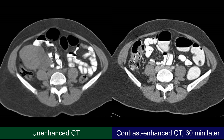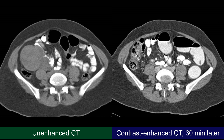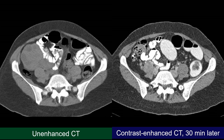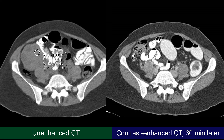On the unenhanced CT we see a solid lesion which is not identified on the contrast-enhanced CT. It has a tiny spot of calcification and a few peripherally located rounded structures less dense than the rest of the lesion. The rest of the lesion is quite dense for what we expect from a soft tissue lesion on unenhanced CT.